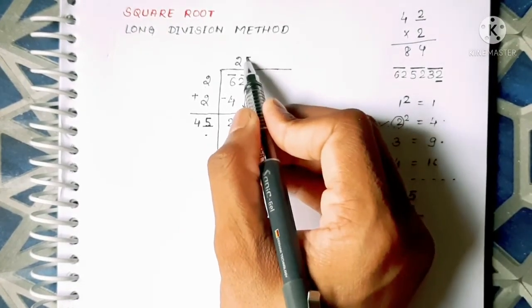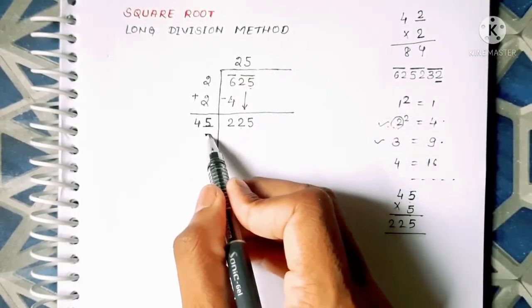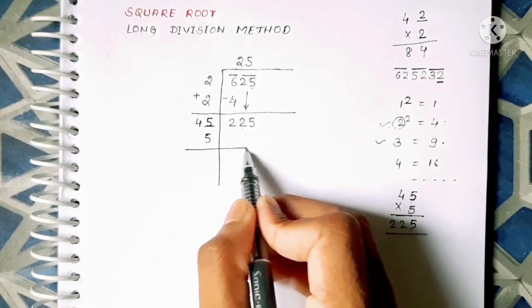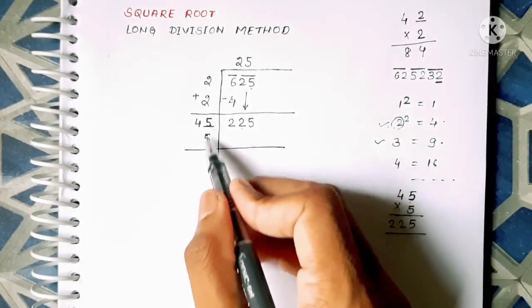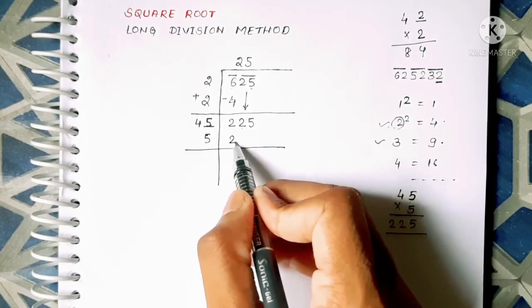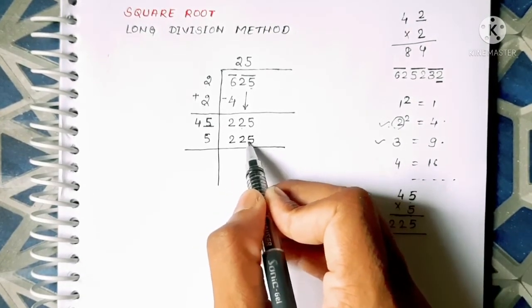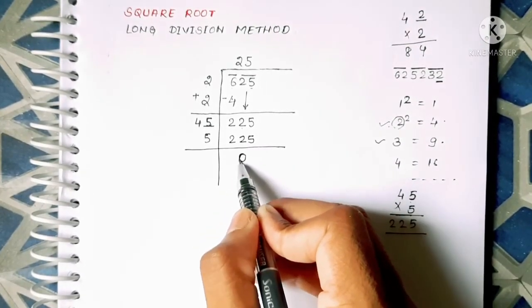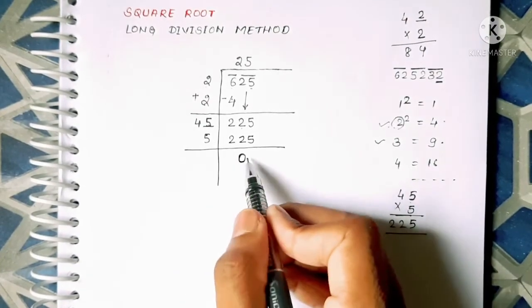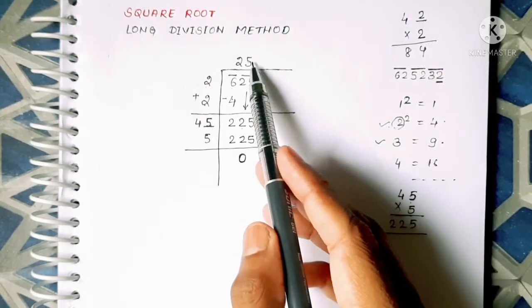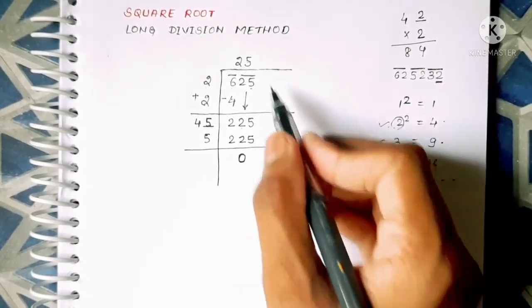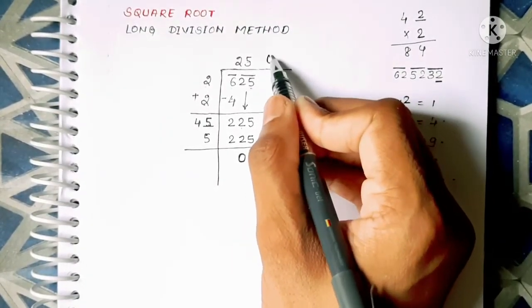And since we got the number 5 here we will have to write it in the quotient also. And the number which comes by multiplying 45 into 5 is 225. When the remainder will become 0 then we will stop doing this and our required square root is 25 which have come in the quotient. This one is quotient, hence we have got the square root of 625.